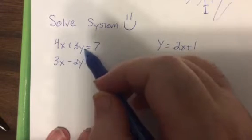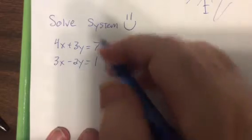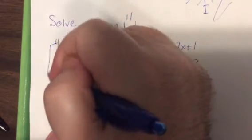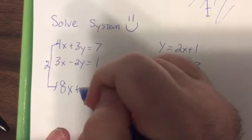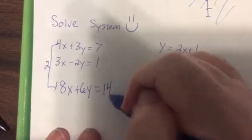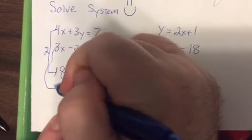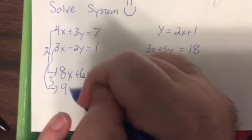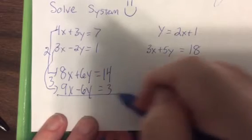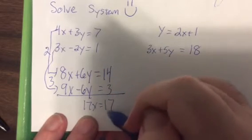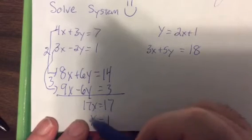Okay, so I'm gonna multiply - I'm gonna get rid of the y. Smaller numbers I like, and they're already opposite sign, that's good. So I'm gonna multiply this one by two: 8x plus 6y. Don't forget to multiply the seven. Then I'm gonna multiply this one by three, so it'd be 9x minus 6y equals three.